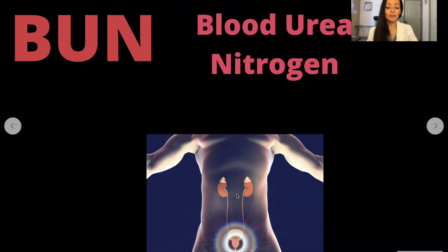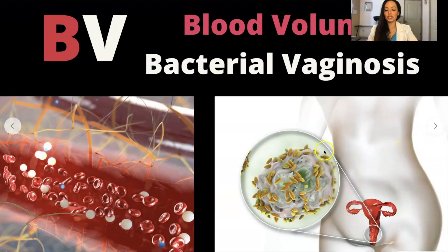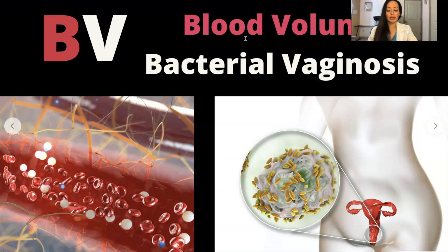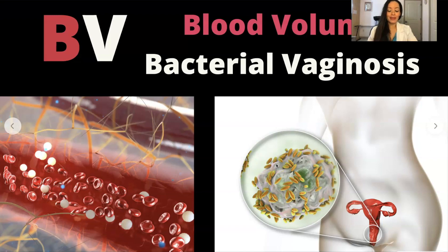Urea is a waste product formed in the liver. BV in the abbreviation reference stands for blood volume, but as a nurse and nurse practitioner I've seen BV used more for bacterial vaginosis, so I'll talk about both. Blood volume is how much blood you have in your system, whereas bacterial vaginosis is a condition that happens when there's too much of certain bacteria in the vagina, changing the normal balance of bacteria. Many women with BV have no symptoms, but if they do, they'll notice a thin white or gray vaginal discharge, pain, itching, or burning in the vagina.